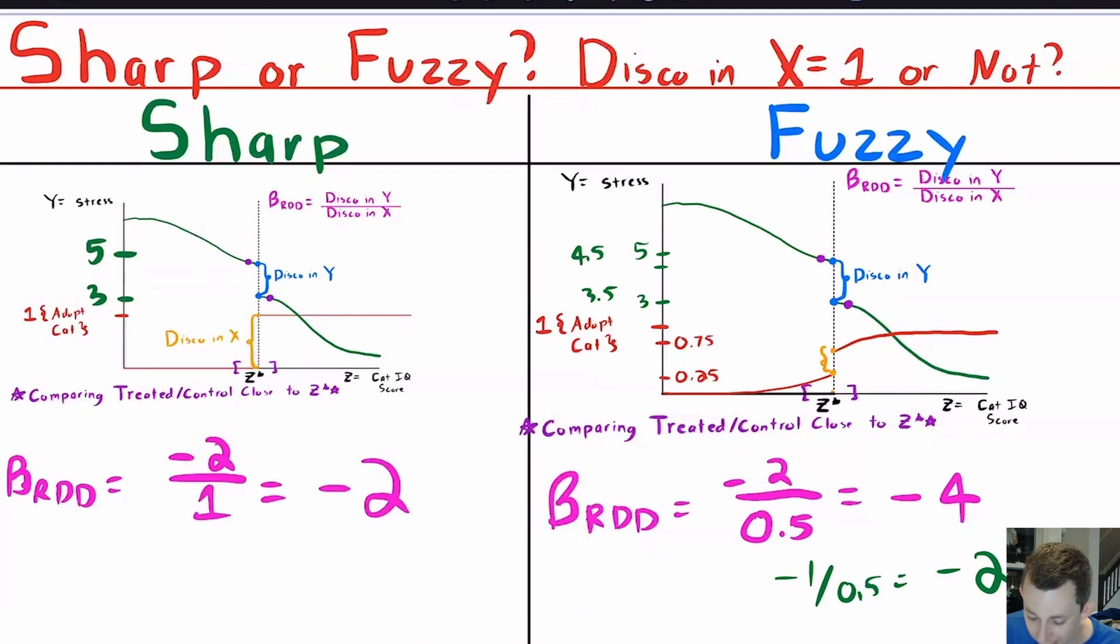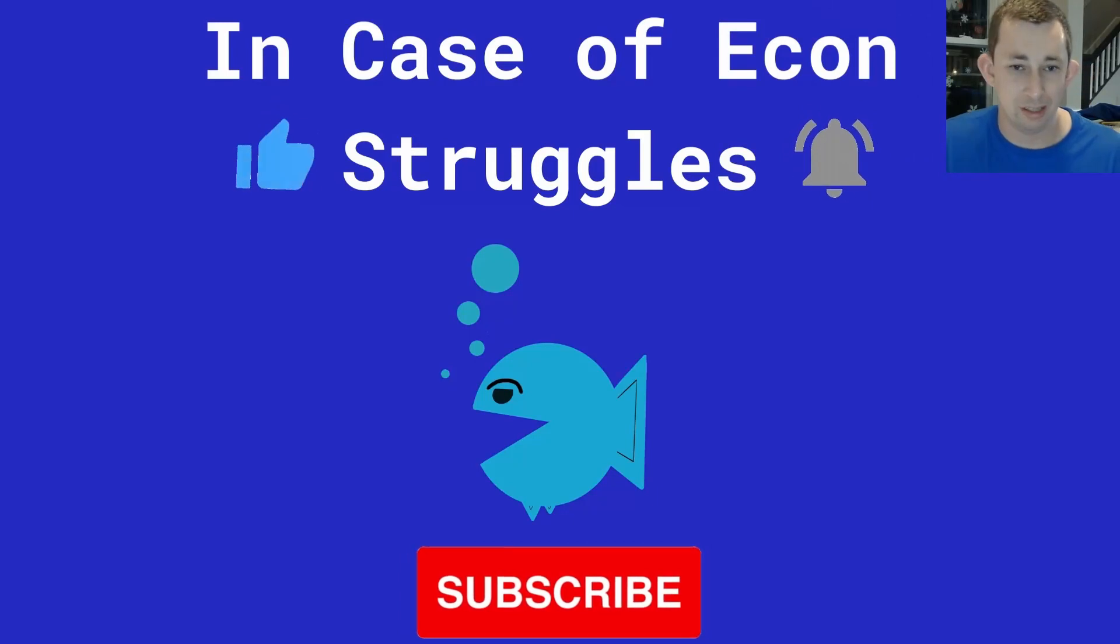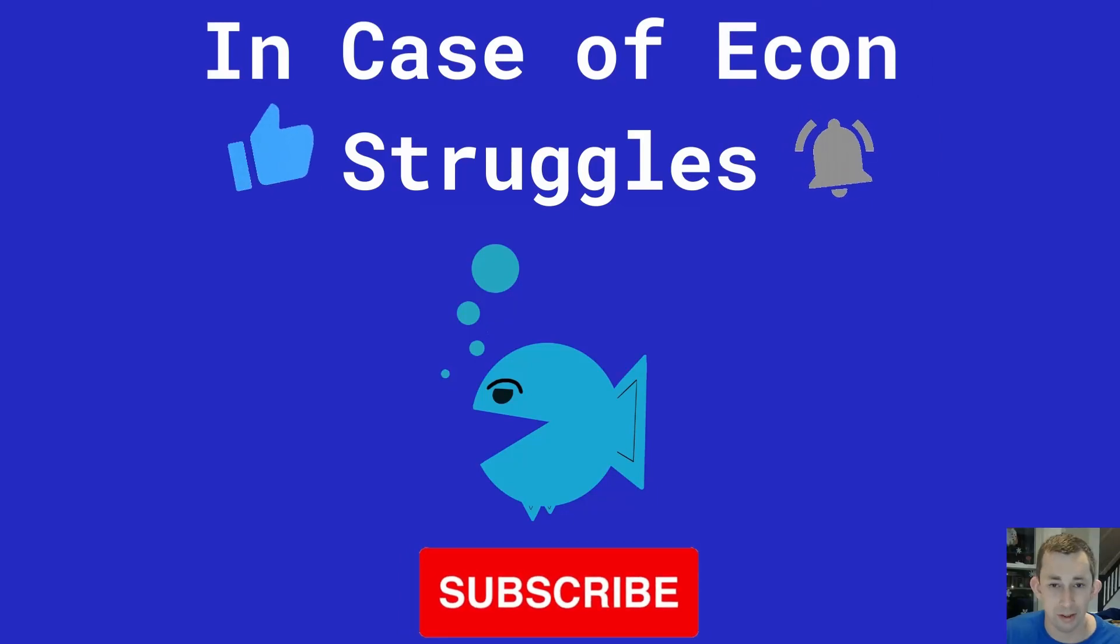Notice that in the fuzzy RD, you need some sort of jump, right? If this treatment status does not change at the threshold, then you do not in fact have an RD, you need to think about another way to estimate your treatment effect. But hopefully this just gives you a real quick review of an RD estimate and a real quick way to tell whether or not an RD is sharp or fuzzy. If this was helpful, make sure to like and subscribe and we will see you next time for another case of econ struggles.